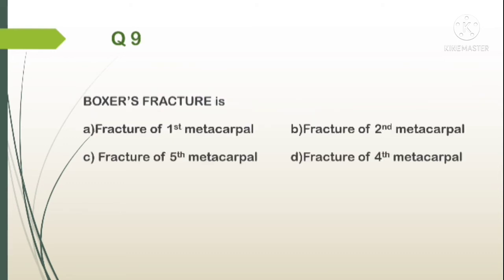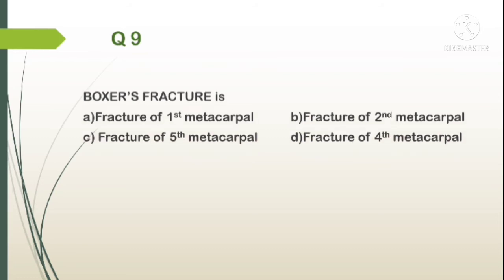Question number 9. Boxer's fracture is: A. Fracture of first metacarpal, B. Fracture of second metacarpal, C. Fracture of fifth metacarpal, D. Fracture of fourth metacarpal. Answer: Fracture of the fifth metacarpal is called Boxer's fracture.